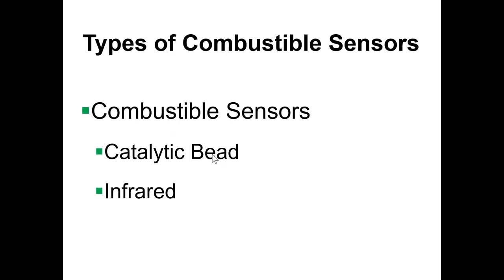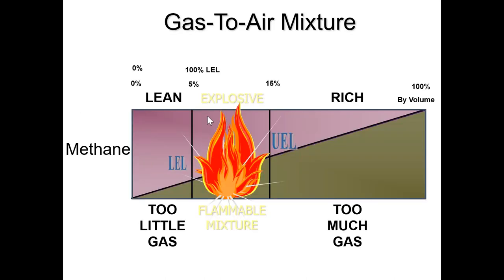Continuing on with combustible gas sensors: these sensors are used to detect what is referred to as LEL of a gas. LEL is known as the lower explosive limit — it's the minimum amount of gas by volume needed to cause an explosion. Anything below the LEL of a gas will not cause an explosion because there's not enough of the gas present. There's also a term called UEL, the upper explosive limit, where there is so much gas that you cannot have an explosion because there is not enough oxygen present.